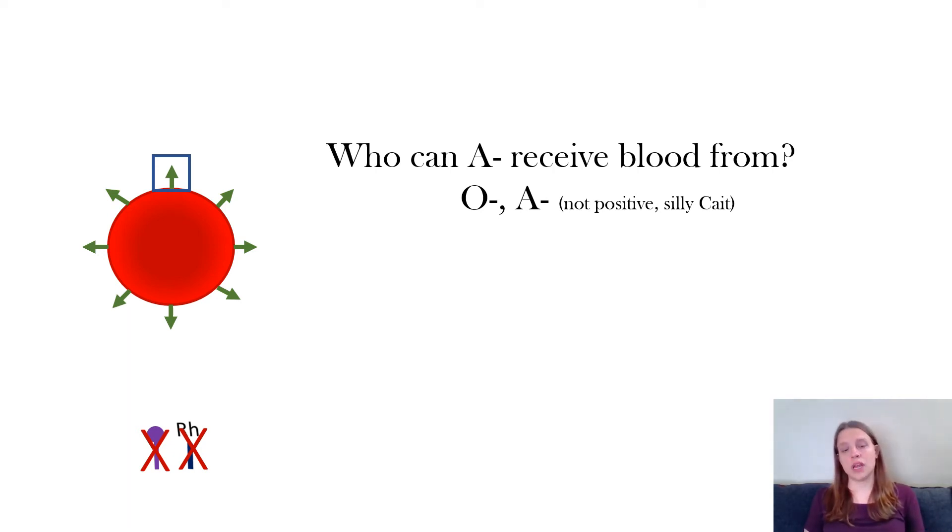So who can I give blood to? I can give blood to anybody that already has A antigens. So A negative, A positive, AB negative, and AB positive.